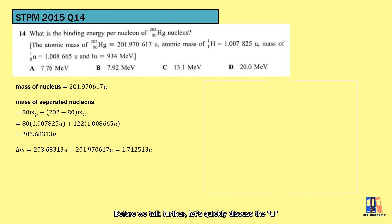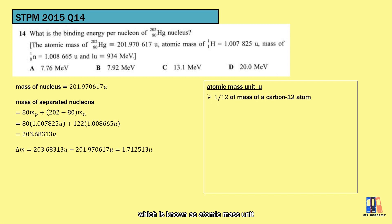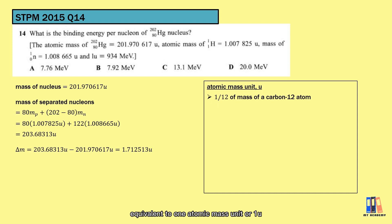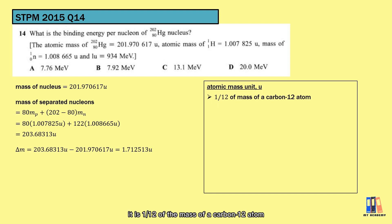Before we talk further, let's briefly discuss the U, which is known as the atomic mass unit. We shall discuss the derivation of how to get the value of mass and binding energy equivalent to one atomic mass unit. Fundamentally, it is 1/12 of the mass of a carbon-12 atom, and the mass of one mole of carbon-12 is 12 grams.